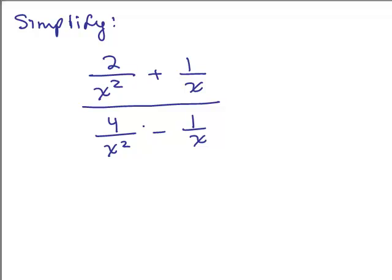So what's the LCD? Method 2 says find the LCD of all the denominators. We've got, for all the denominators, an X squared, an X, an X squared, an X. The least common denominator is simply X squared. So we want to multiply the numerator and the denominator of this big complex fraction by the least common denominator, which is X squared over X squared — multiplying the numerator by X squared, the denominator by X squared.